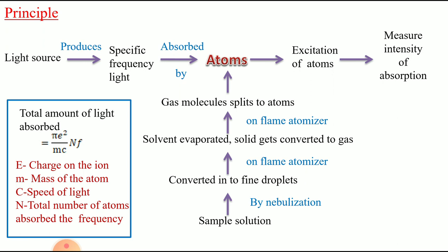The principle of atomic absorption spectroscopy is similar to flame photometry. The sample solution is converted into fine droplets by nebulization. These fine droplets are then exposed to the flame atomizer, where the solvent is evaporated. The solute solid particles are converted into vapor or gaseous state, and then the molecules are converted to atoms by receiving thermal energy from the flame.